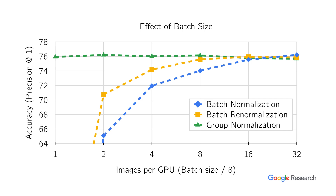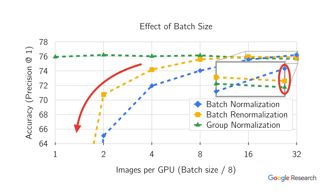We now compare the performance of best performing methods for each of those categories. Batch renormalization in yellow significantly improves the performance over batch normalization, while group normalization in green restores the performance for smaller batch sizes. However, these methods either still lose performance for smaller batches, or do not match the performance of batch normalization for larger batch sizes, or introduce artificial constraints on the model architecture.